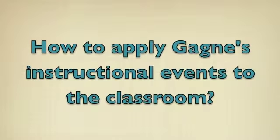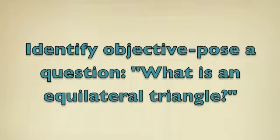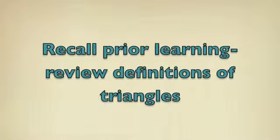You might be wondering how you can apply Gagné's instructional events to the classroom. The following nine slides give examples of how you can apply his instructional events to teaching students how to recognize equilateral triangles. The first is gain attention — you can do this by showing a variety of computer-generated triangles. The next is identify objective — you can pose the question: what is an equilateral triangle? Next is recall prior learning, and you can do this by reviewing definitions of different triangles.